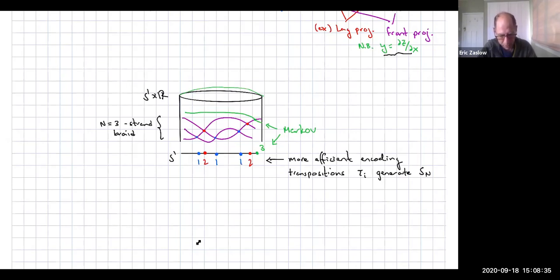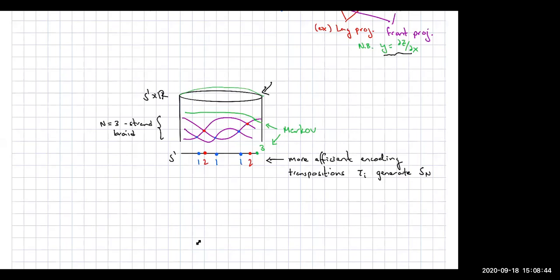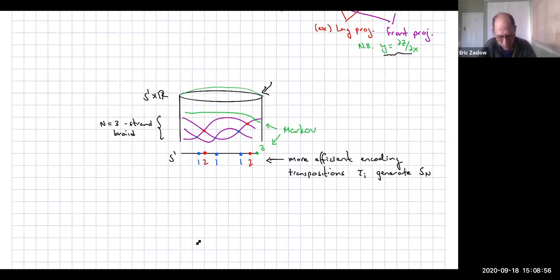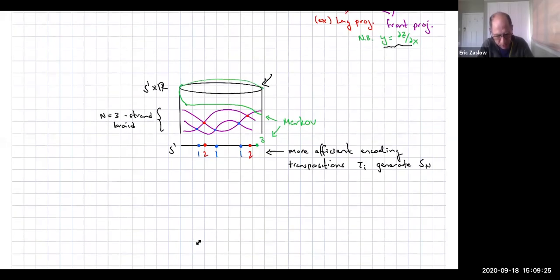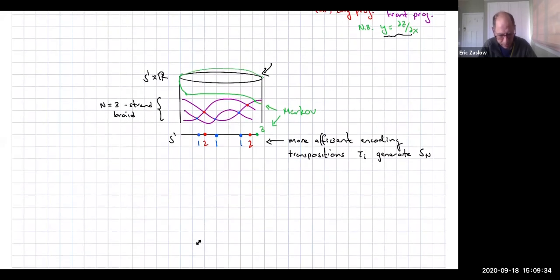If the disc closes up, you can see that this Markov move allows you to take a green strand and unloop it. So that three-strand front projection and the four-strand front projection with the extra crossing really describe the same knot. The lesson is that we can encode these things efficiently — as long as there are no cusps — by indicating the crossing locus down in the base.